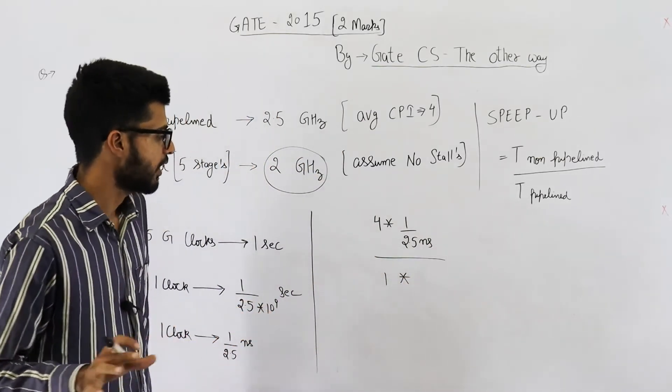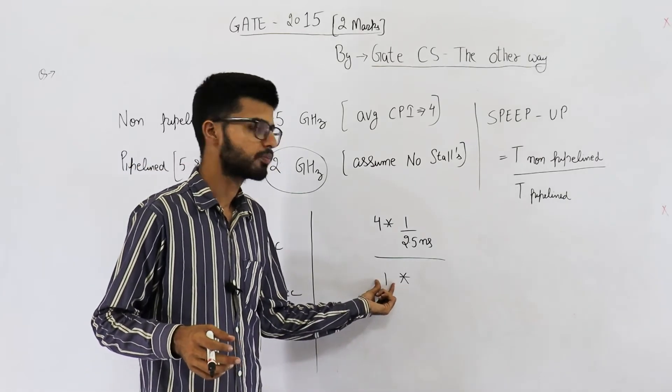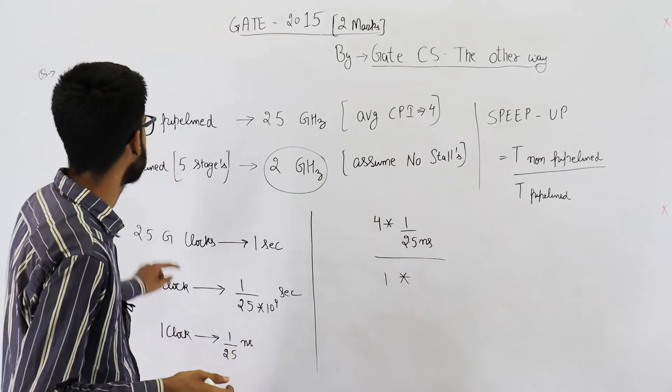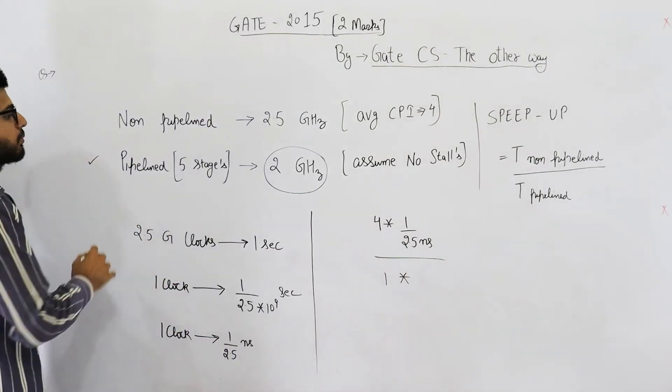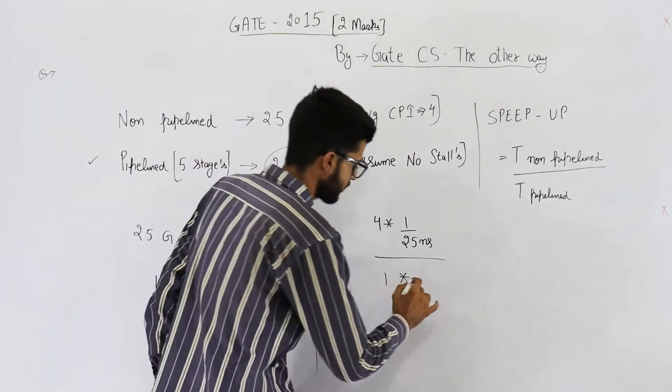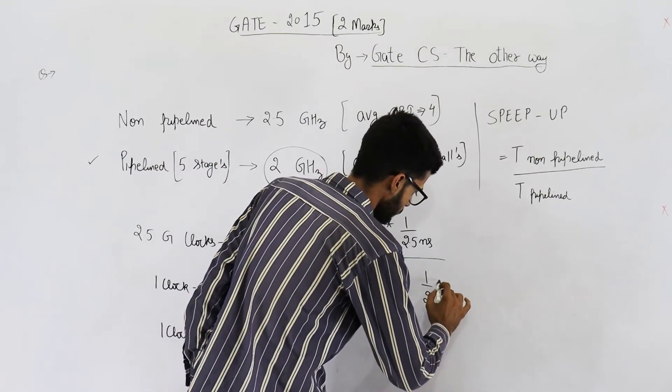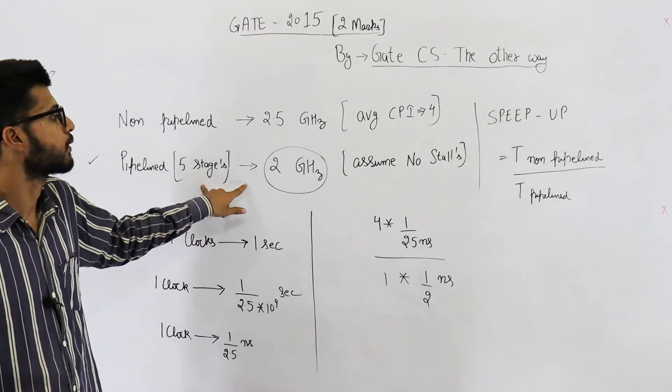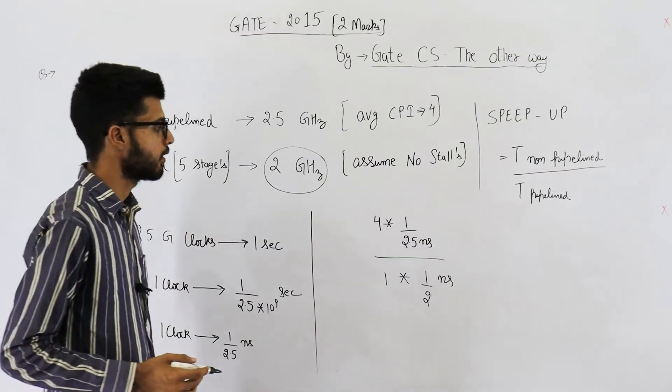That means, every instruction requires 1 clock. Now, we'll just find out how much time does 1 clock take on this pipelined version. So, similarly, you can solve that and it will be 1 upon 2 nanoseconds. So, every half nanosecond, we generate a clock for the pipelined version.